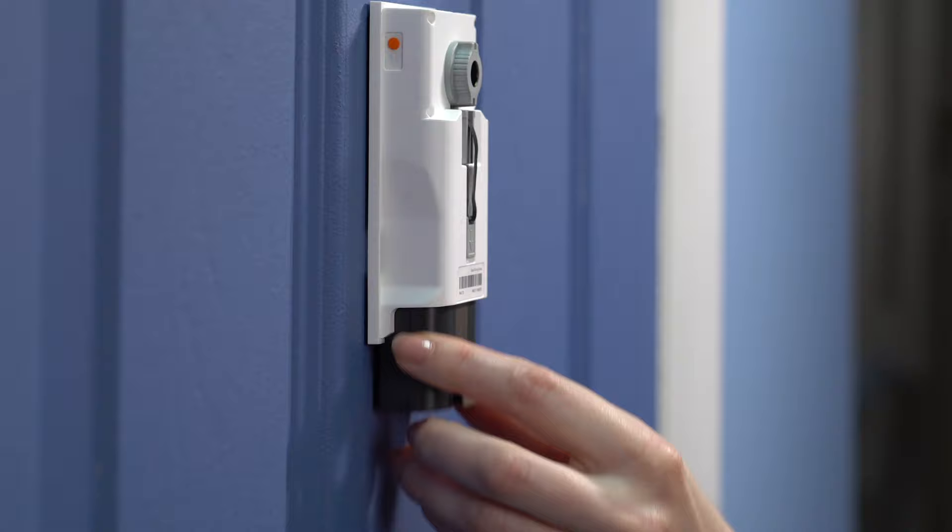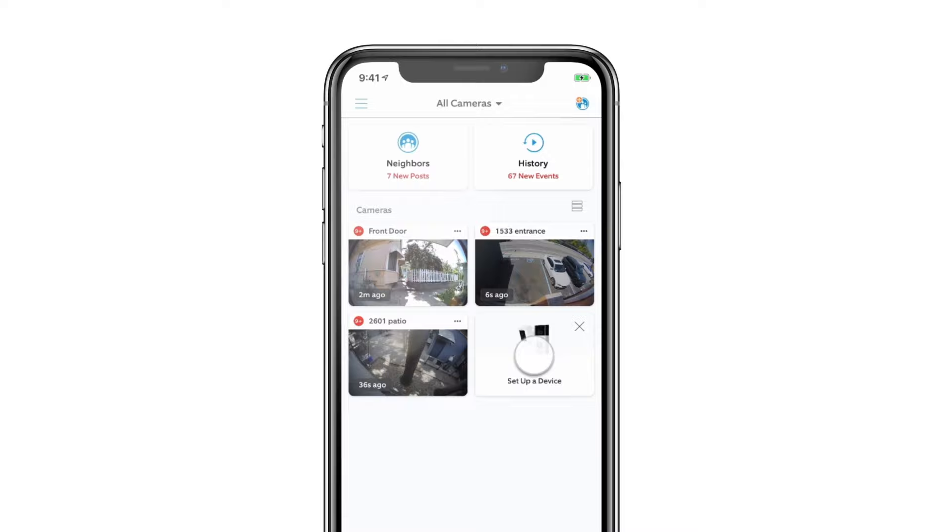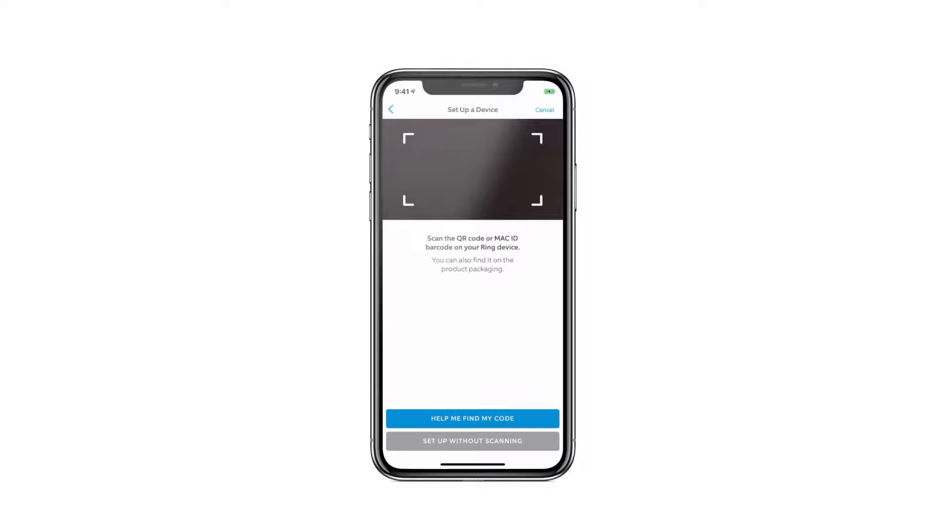To set up your peephole cam, open the Ring app and tap Set Up a Device. Then, choose Doorbells and follow the in-app instructions to complete setup.